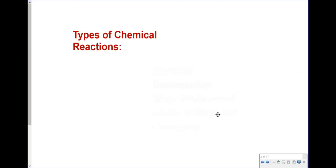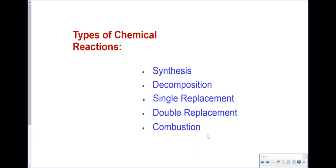Chemists find it useful to place chemical reactions into categories. By placing reactions into categories, we can predict the outcomes of chemical reactions more successfully. We will be organizing our reactions into five categories. In the previous lesson, we studied synthesis reactions. This lesson will focus on decomposition reactions.